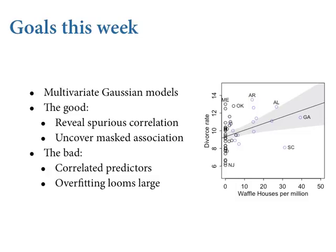On Thursday we'll talk about some bad things with multivariate models — everything comes with costs. You have to be careful when you have predictors that are strongly correlated. These models are not magic. We'll get to introduce the problem of overfitting: models that have more parameters always fit better. Always. If you fit them correctly, they will always fit your sample better than a model with fewer parameters. Eventually you get a parameter for every data point, a perfect fit, but you'll understand nothing.